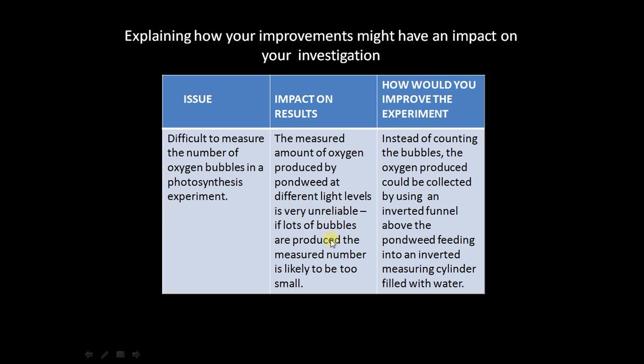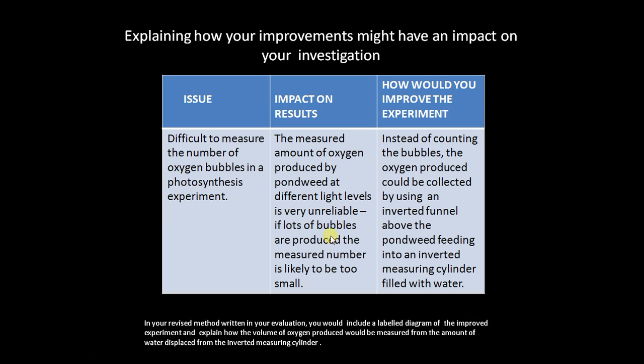At high light intensity it's very likely that the number of bubbles you count is going to be too small. So how would you improve your experiment? Well, instead of counting the bubbles, the oxygen produced could be collected by using an inverted funnel with a delivery tube from the funnel going from above the pond weed feeding into an inverted measuring cylinder, which is filled with water so that as the oxygen bubbles are produced the oxygen is passed over into the inverted measuring cylinder. This pushes the water out and by using the scale on the side of the measuring cylinder you can measure accurately the amount of oxygen being produced.